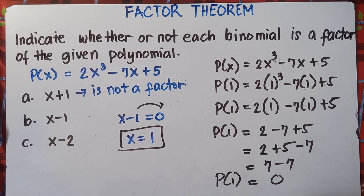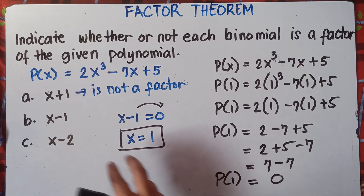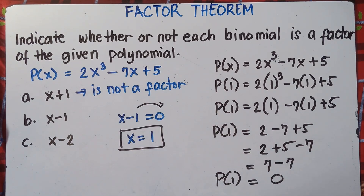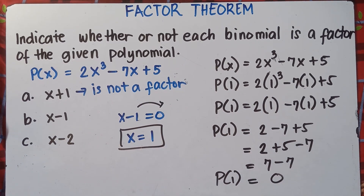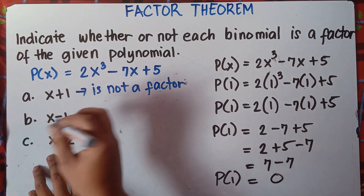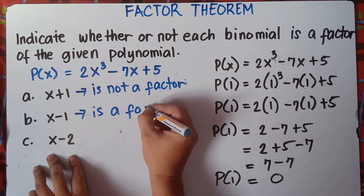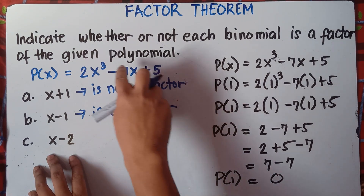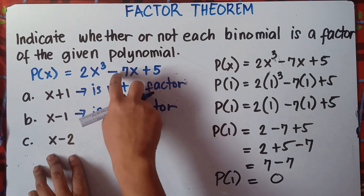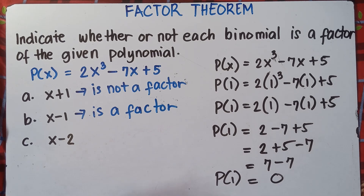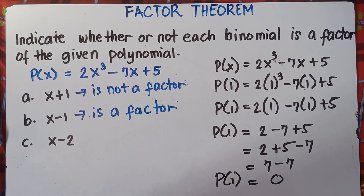Since P(1) equals 0, therefore x minus 1 is a factor of this given polynomial 2x³ minus 7x plus 5. So x minus 1 is a factor.